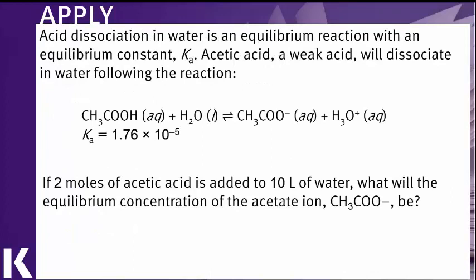One specific kind of equilibrium system is an acid dissociation reaction. In this case, the Ka is the Keq. That's really all a Ka is, is the equilibrium expression for an acid dissociation reaction. Here we have acetic acid, and we have the reaction in which acetic acid interacts with water to give us the acetate anion and the hydronium ion. We're told that the Ka for this is 1.76 times 10 to the minus fifth. The specifics of the problem are that we have 2 moles of acetic acid added to 10 liters of water, and we're being asked to find the equilibrium concentration of the acetate ion.